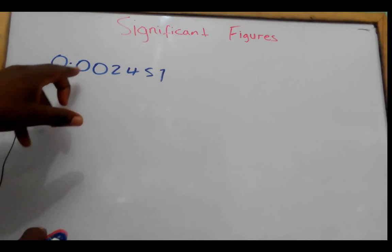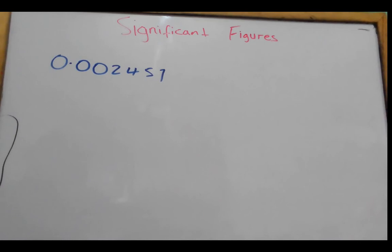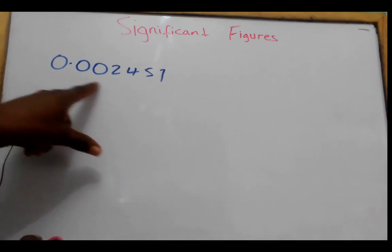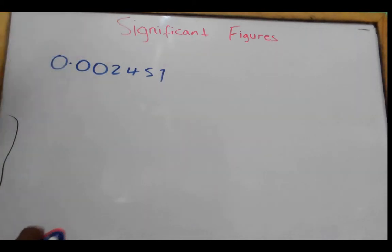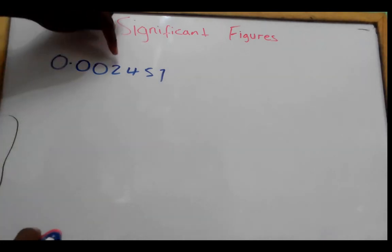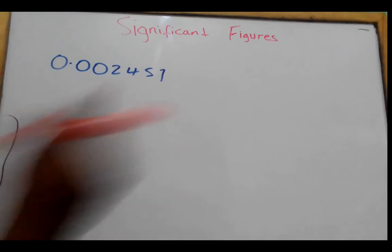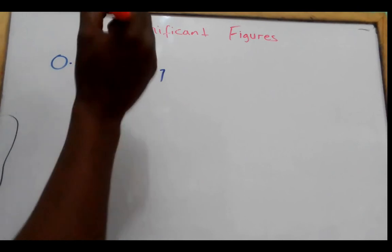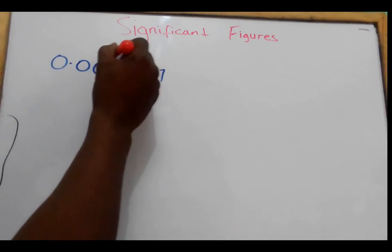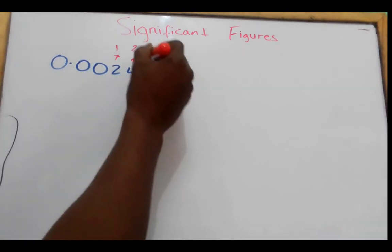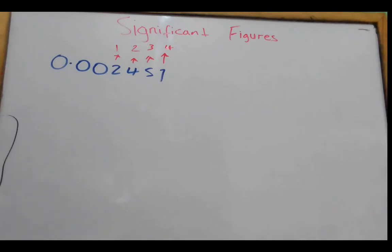Given 0.002457 — remember, leading zeros are not significant figures. So the significant figures here would be 2, 4, 5, and 7. The first significant figure is 2, the second is 4, the third significant figure is 5, and the fourth is 7.